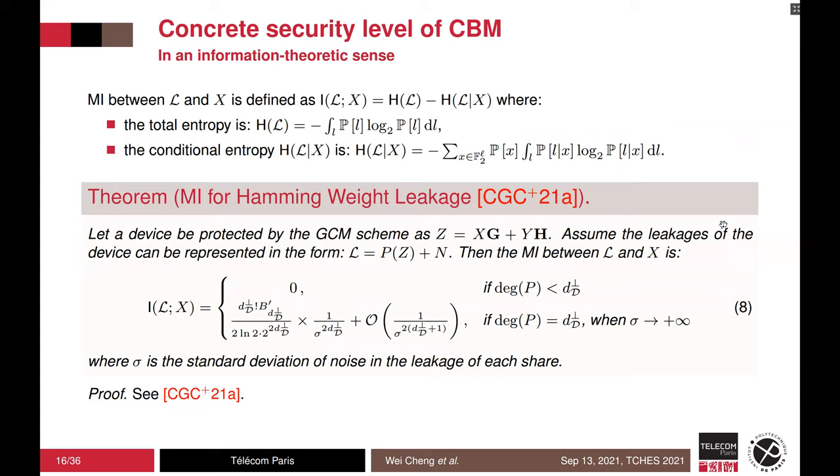Next, from an information-theoretic perspective, the mutual information between the leakage and the sensitive variable X is computed by two entropies. The total entropy H(L) and the conditional entropy H(L|X) are given as follows. Then we have the following theorem for mutual information in code-based masking. As in equation 8, we have a mutual information between L and X equals 0 when the degree of p is smaller than d^⊥, which is consistent with the probing security order. And if the degree of p equals the dual distance, the mutual information is linked to the dual distance and the adjusted kissing number as in SNR.